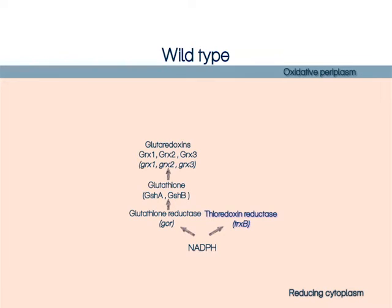In the thioredoxin pathway, thioredoxin reductase, or TrxB, reduces thioredoxins, which in turn reduce any disulfide bond formed.